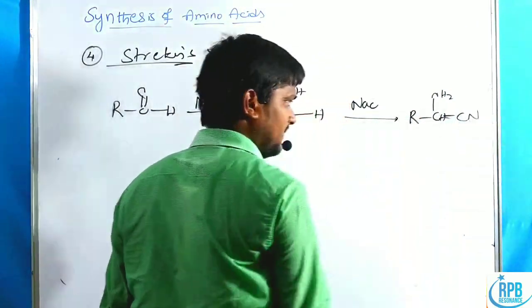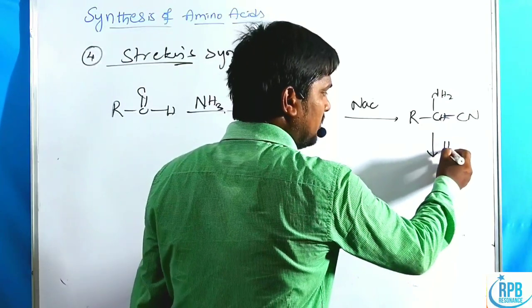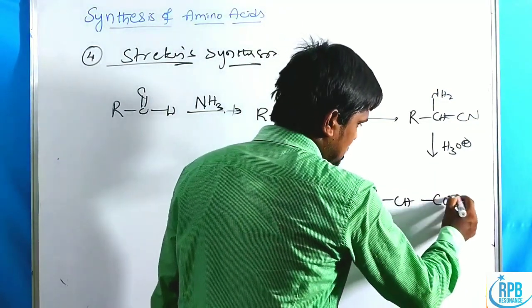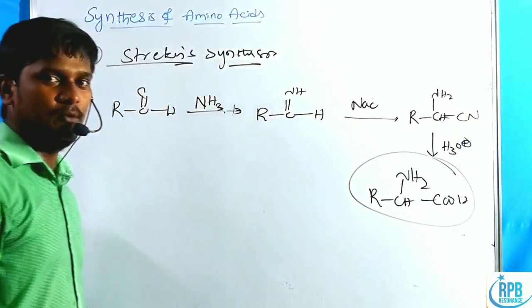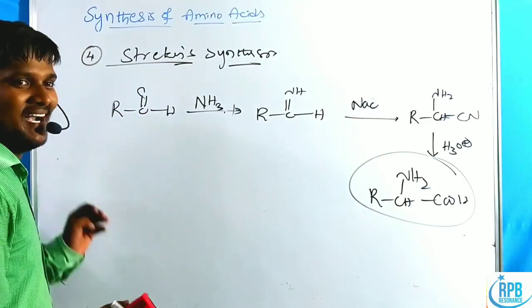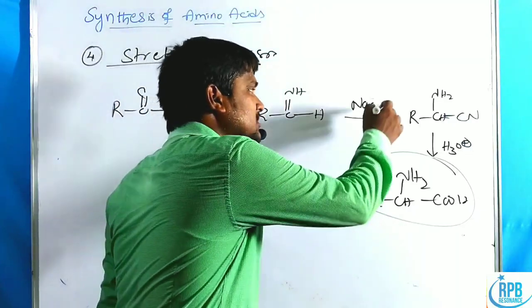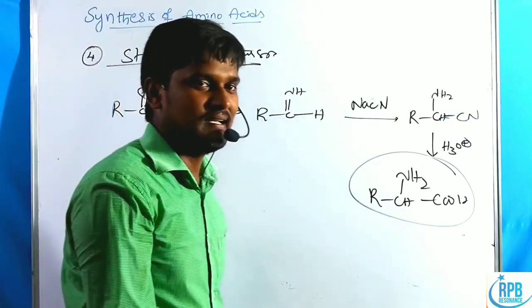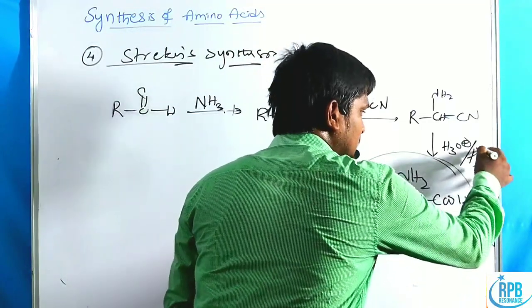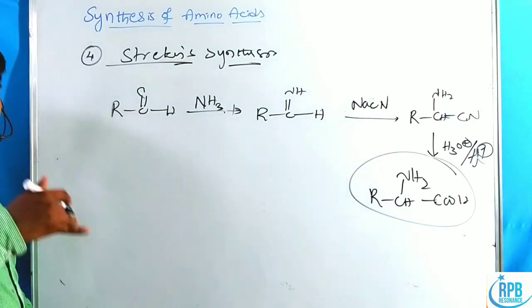The cyanide adds to the imine in a nucleophilic addition (not substitution) reaction to give R–CH(NH₂)–CN. Followed by acidic hydrolysis of the nitrile group, we obtain the alpha amino acid R–CH(NH₂)–COOH. This is a straightforward method to synthesize alpha amino acids.